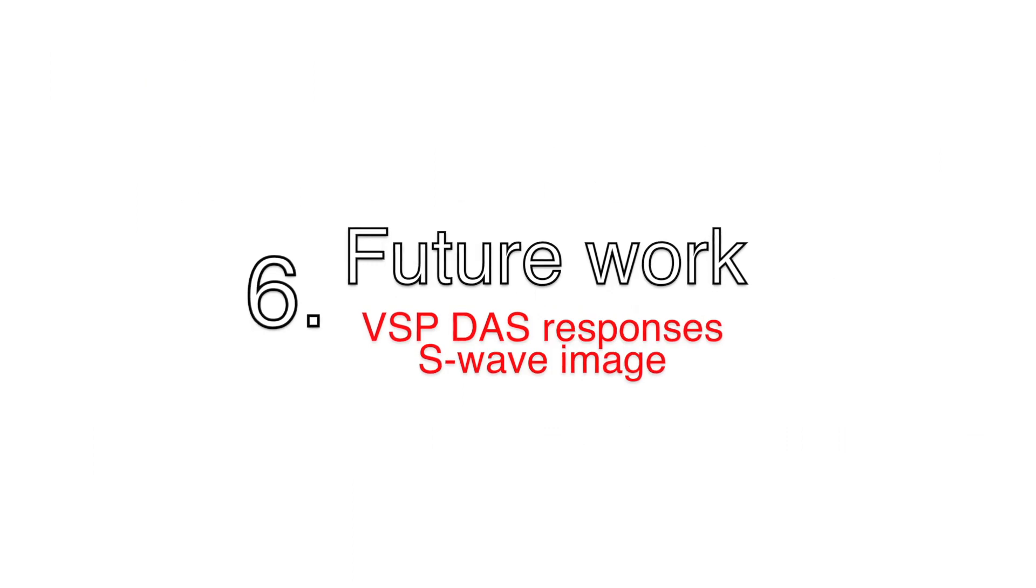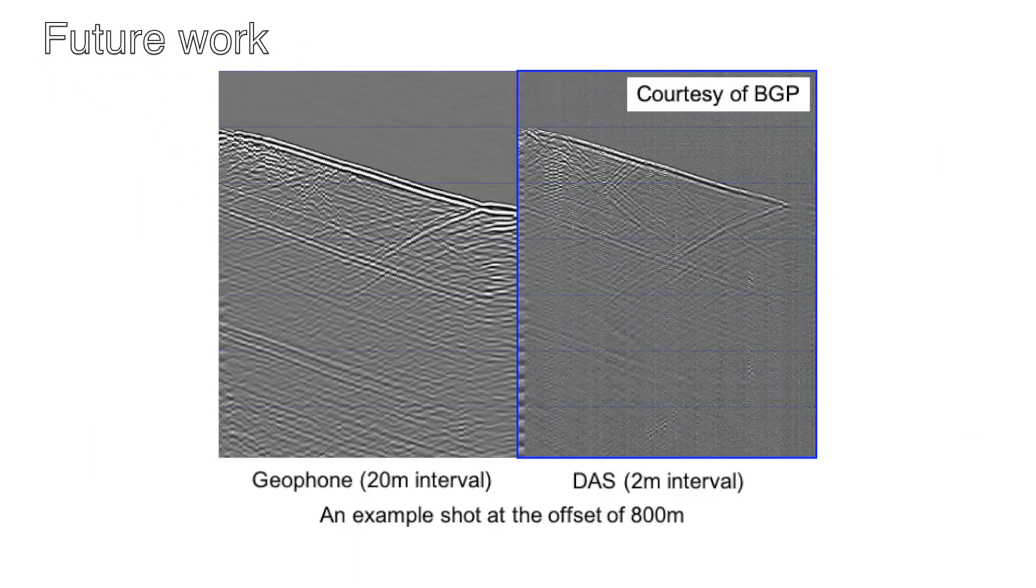Following the P wave imaging success, we are working on two extended directions. First, on the comparison with the DAS data. As the fiber optics record one component data as opposed to the three component geophone data, two questions are asked. One, how does the DAS data compare with the raw geophone data? And two, what's the significance of the wave field separation in the DAS data and how do we handle it if a separation is needed?